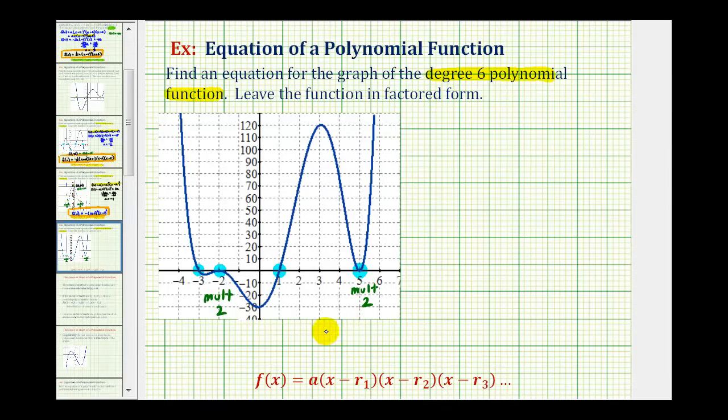To do this, we'll use the factored form of a polynomial f(x) = a(x - r₁)(x - r₂)(x - r₃)... where a is a constant and r₁, r₂, r₃, and so on are the roots or zeros of the polynomial function. To determine the value of a, we'll also identify one more point on the function. Let's use the y-intercept at (0, -30).